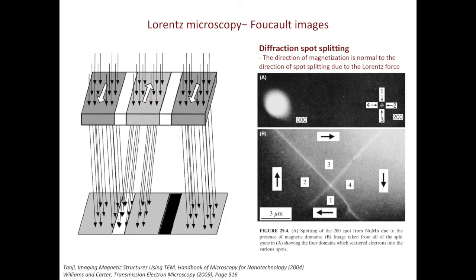For magnetic materials, they have magnetic domains. Using the example on the left, certain domains will have the magnetic moment pointing down, and the other domain will have the magnetic moment pointing up. The local magnetic moment will bend electrons in different ways. Such local perturbation will be reflected in diffraction patterns as spots splitting, as the example shown on the right from the textbook — you can see the 200 spot splits into 4.